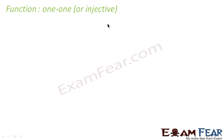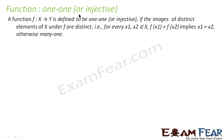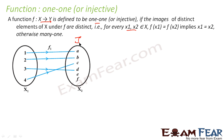Let's discuss the one-one (injective) function in detail. A function f: X → Y is defined to be one-one or injective if the images of distinct elements of X are distinct — that is, f(x1) = f(x2) implies x1 = x2. For example, f(1) = a and f(2) = b.